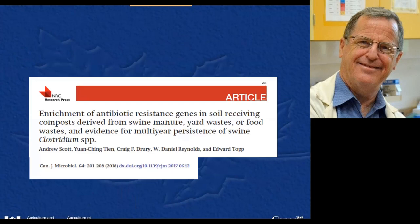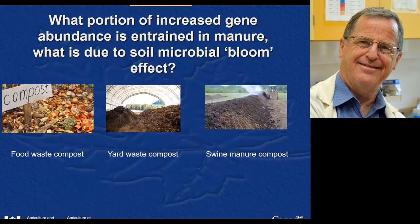The second piece of data, published in 2018, asked: when we see the increase in gene abundance in our field experiments, what portion is due to genes entrained in the fecal material, and what portion is from background bacteria that simply increased in abundance because we're feeding the soil? If it's the first instance it might be of concern; if it's the second, less so. We set up a field experiment comparing plots receiving food waste compost with no fecal material, yard waste compost with no fecal material, and swine manure compost with fecal material.